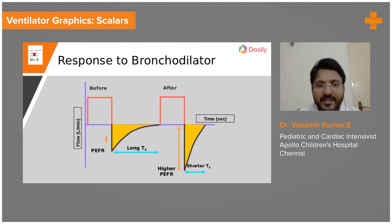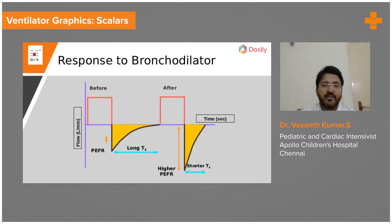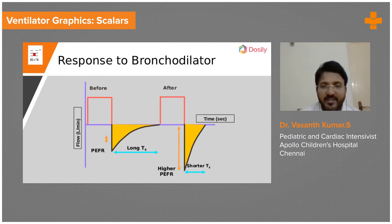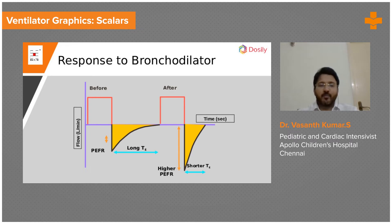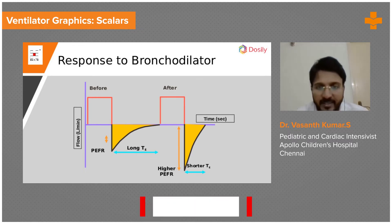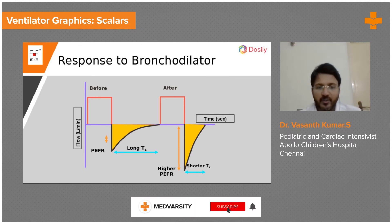Here you can see the peak expiratory flow is small — it should be larger. The expiration is taking longer to reach baseline. Because there is bronchospasm, you give nebulization. Post nebulization, the peak expiratory flow has increased and the expiratory time has come down. In COVID scenarios, we generally refrain from giving nebulization. For most patients we end up giving only metered-dose inhalers — MDIs work very well even for sick patients.